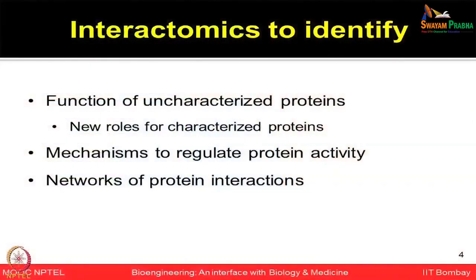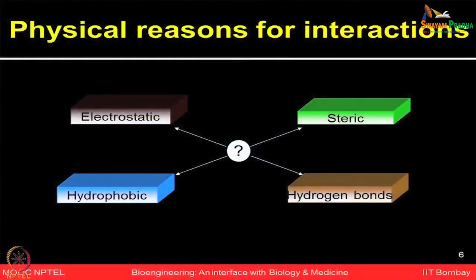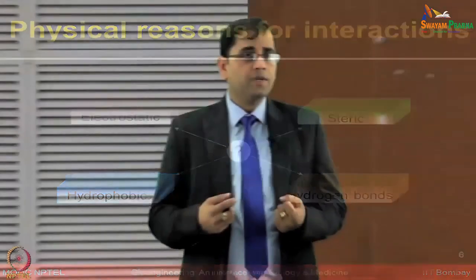Interactomics aims to identify the function of uncharacterized proteins, to define new roles for characterized proteins, understand the mechanisms to regulate protein activity, and map possible networks of protein interactions. Interactions could be very transient — just a fraction of a second — or permanent and very strong. Interactions can also be divided into weak or strong, obligate or non-obligate, homo-oligomeric or hetero-oligomeric. The physical reasons for such interactions include electrostatic interactions, steric effects, hydrophobic interactions, and hydrogen bonds. Understanding these and the technologies to study them is very crucial.